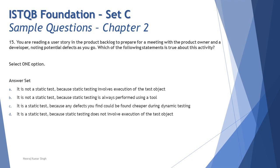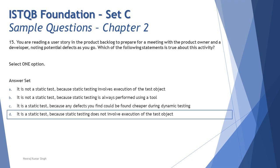We're left with just option D: it is a static test because static testing does not involve execution of the test objects. Yes, absolutely — this is the definition of static testing. We do not do any particular executions; we only do a review where we statically read the content, understand it, and raise concerns. Even in code review, we do not run the code — we just statically review it to look for anomalies. So the right answer is D.